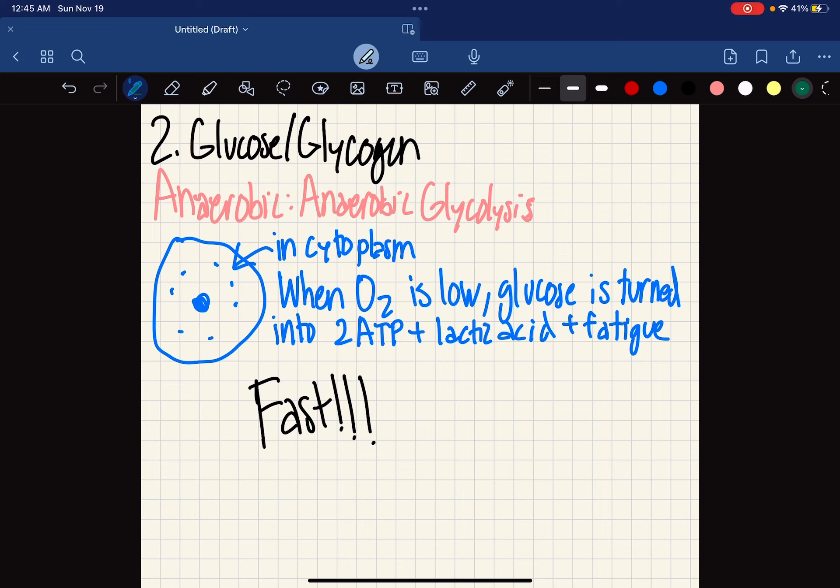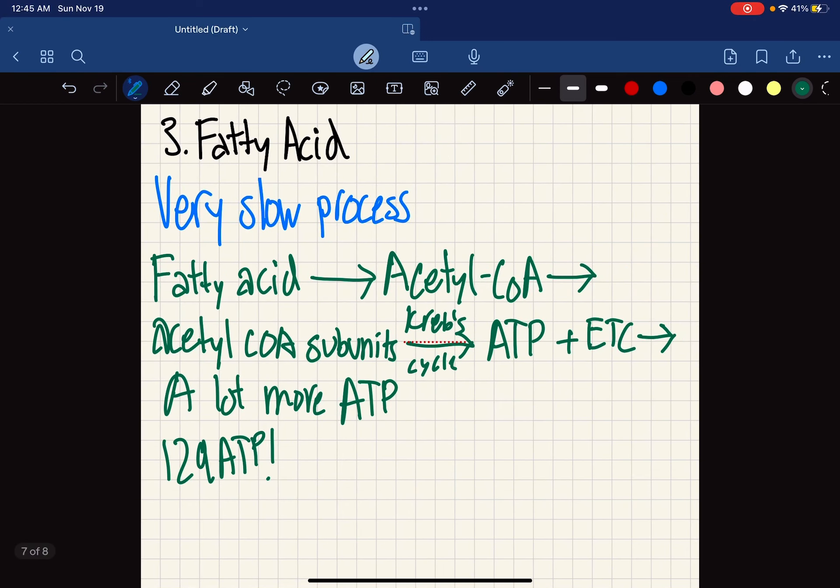We move on to the third energy source, fatty acid. It's a very slow process. I kind of skipped a few steps, but we don't really need to know. In short, the fatty acid breaks down to acetyl CoA.